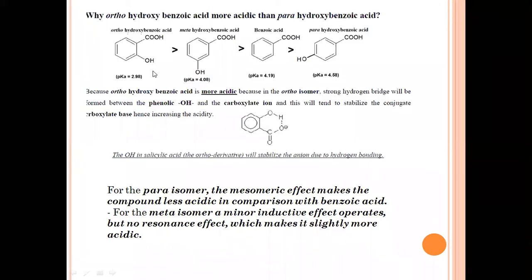Our first example is why ortho-hydroxybenzoic acid is more acidic than para-hydroxybenzoic acid. When H+ ion is removed, the pKa value is reduced — phenol is just acidic. In benzoic acid, when the acid functional group is substituted, it will affect the acidity. So why is ortho-hydroxybenzoic acid more acidic than para-hydroxy?